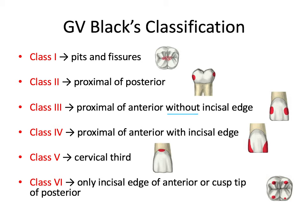Class 4 decay is also the proximal surface of the anterior teeth, but this time it does involve the incisal angle. A Class 4 lesion is basically a larger version of Class 3 that covers the incisal angle.